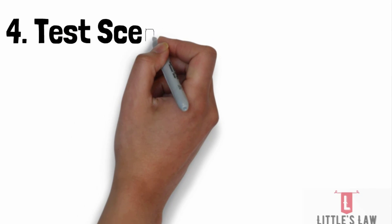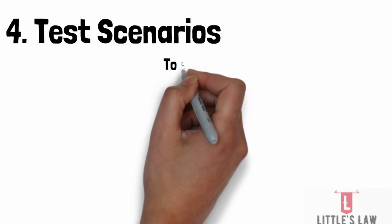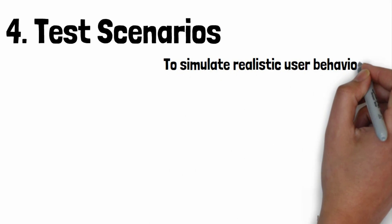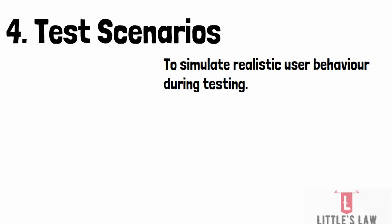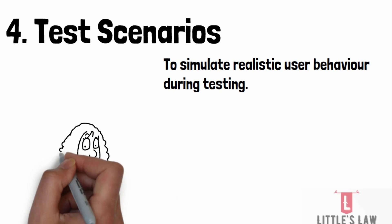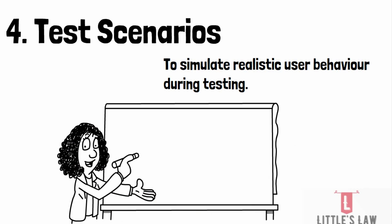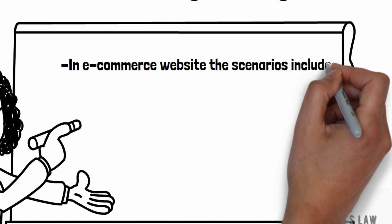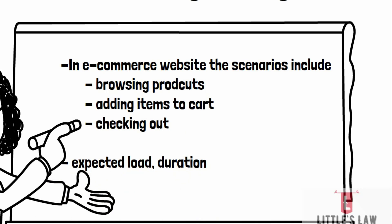The fourth pointer is test scenarios. Test scenarios should be defined to simulate realistic real-world user behavior during performance testing. For example, if the system is an e-commerce application, the test scenarios should include browsing products, adding items to the cart, and checking out. The expected load, duration, and other parameters of each scenario should also be defined as part of the test scenarios.